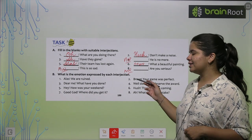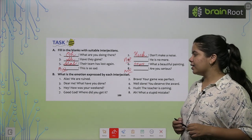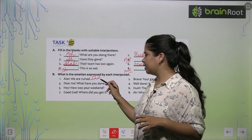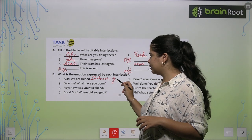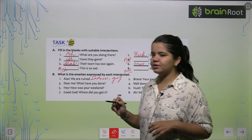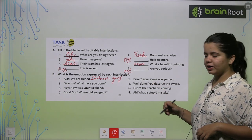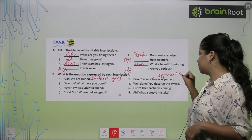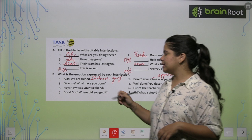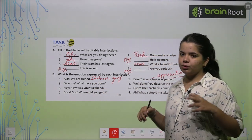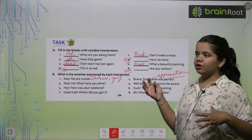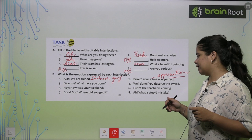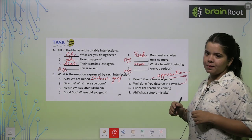Let's see ahead. What is the emotion expressed by each interjection? We will discuss it. First: Alas, we are ruined. What emotion can you identify? This has an emotion of sadness or grief, meaning you feel bad. Grief is being expressed. Second: Bravo, your game was perfect. This is appreciation, being happy, basically appreciation.